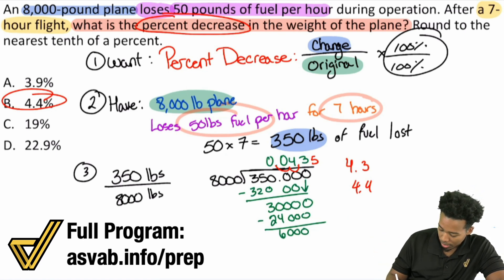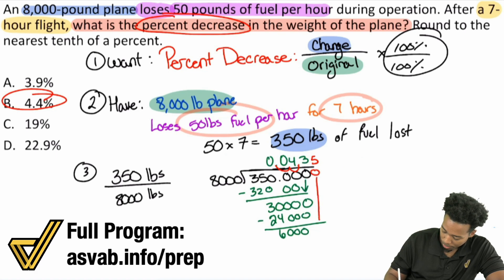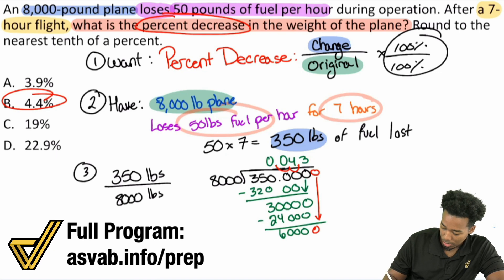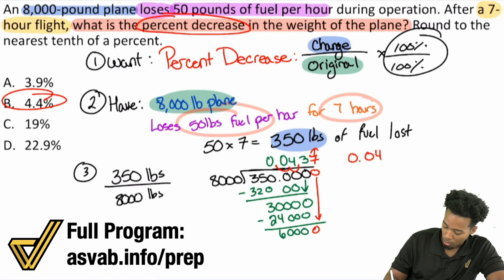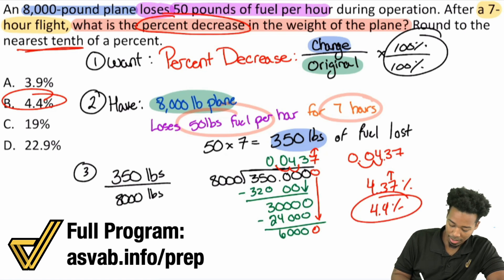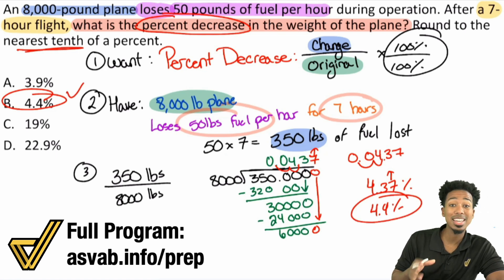Finishing the division, we drop another zero to get 60,000. 8,000 goes into 60,000 seven times. So we end up with 0.04375, which is 4.375%. Rounded to the nearest tenth, that forces it to round up to 4.4%. And that's why B is going to be the answer.